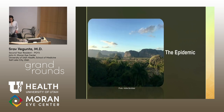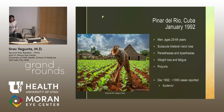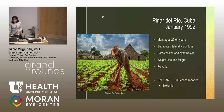The story of the epidemic starts in the region of Cuba called Pinar del Rio, the westernmost region, in January 1992. At this time, men aged about 25 to 64 were presenting with subacute bilateral vision loss, paresthesias and dysesthesias, weight loss, fatigue, and polyuria. By the end of the year, a thousand cases had been reported — this was turning into an epidemic.